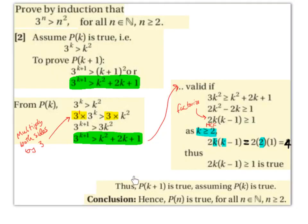Thus P(k+1) is true assuming P(k) is true. Conclusion: hence P(n) is true for all n ∈ ℕ where n ≥ 2.